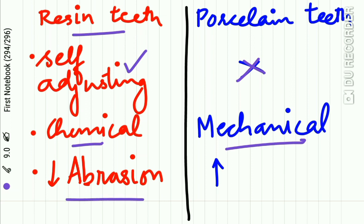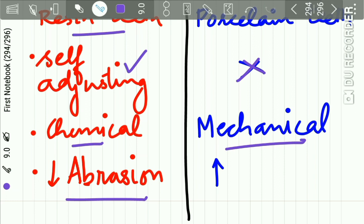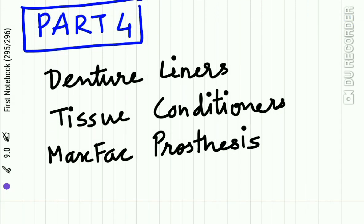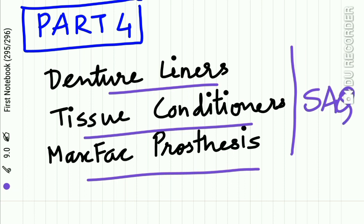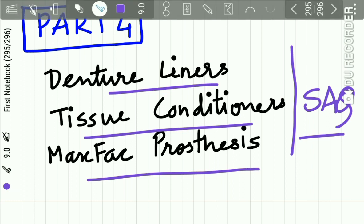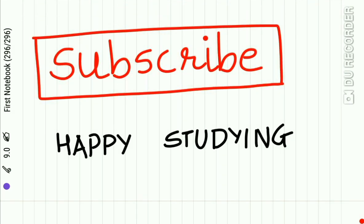There is decreased abrasion resistance in resin teeth, while porcelain teeth show increased abrasion resistance. This completes Part 3 of denture base materials. The next lecture — the final concluding Part 4 — will discuss denture liners, tissue conditioners, and maxillofacial prosthetics, which are very important short answer questions frequently asked in exams. Watch all four parts of denture base materials in continuity. Please subscribe to the channel if you haven't yet, and happy studying.